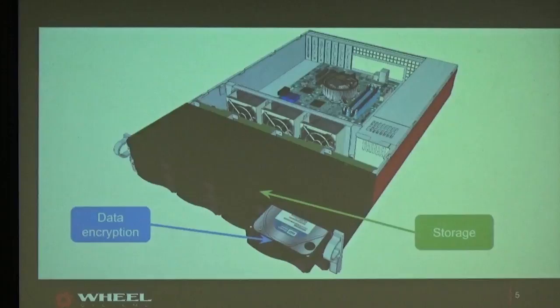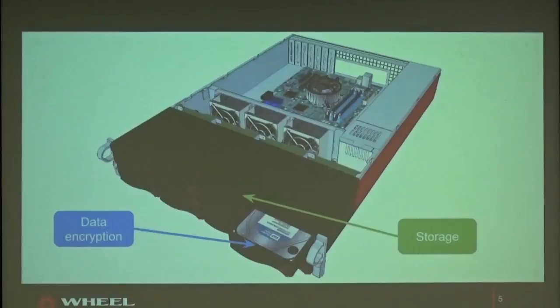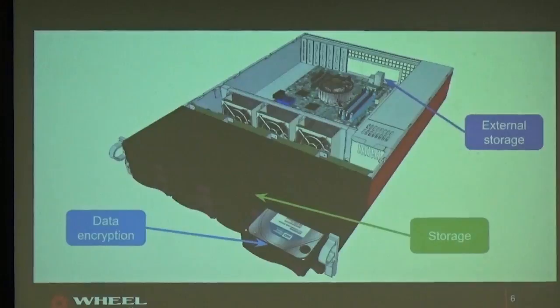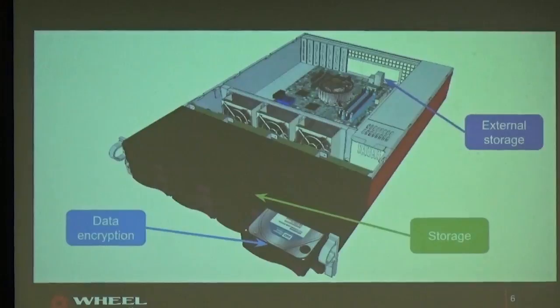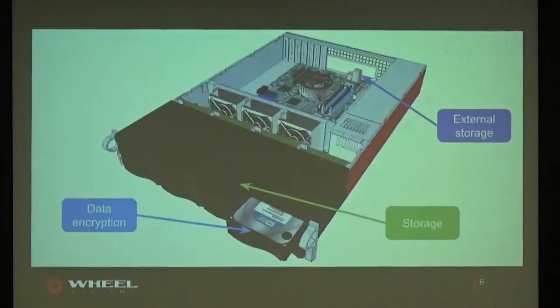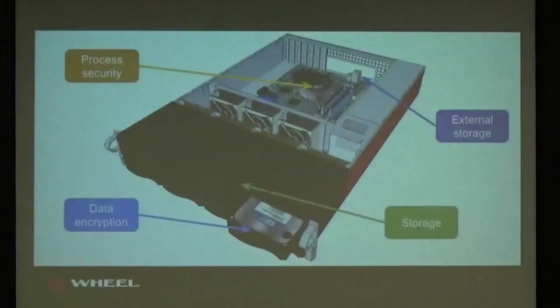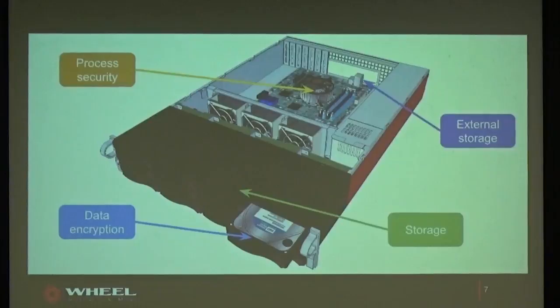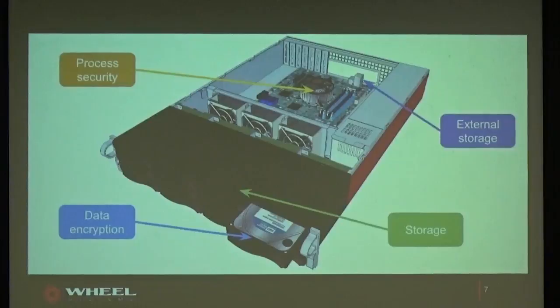Another topic is storage — which file system we are using, how we configure it, how we upgrade it. No matter how many disks you put into your appliance — it can be 12, 20, or 30 terabytes — there will always be a customer for whom it's not enough. So another component we will talk about is external storage and how we build it into our appliance. The last part we will discuss today is process security — how to build our whole infrastructure to be a secure one.